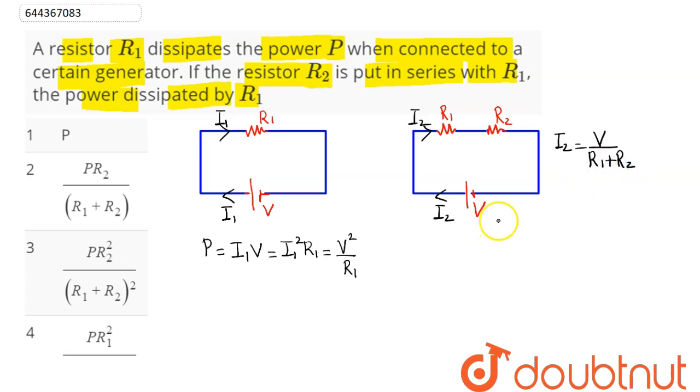So now across this resistor R1, the power dissipated, given by Joule's law of heating, can be written as I2 squared R1, where I2 we calculated as V divided by R1 plus R2, whole squared, times R1.